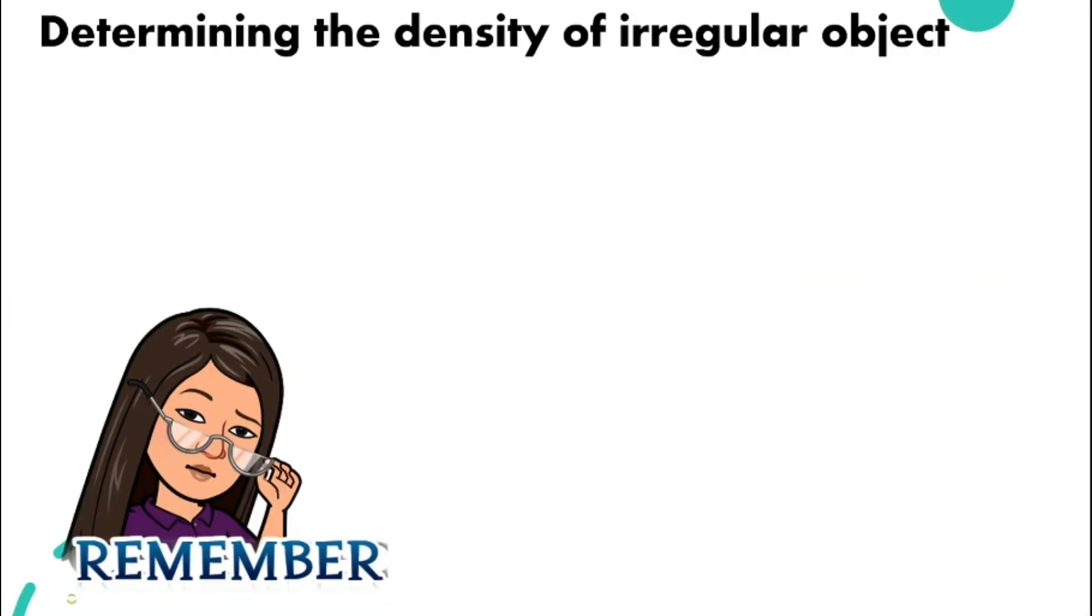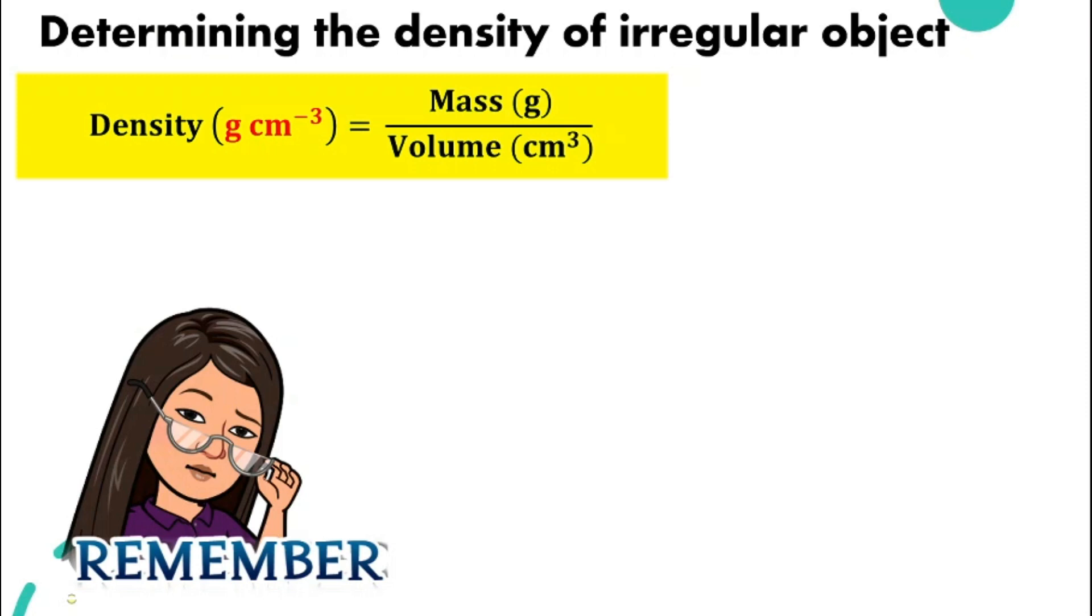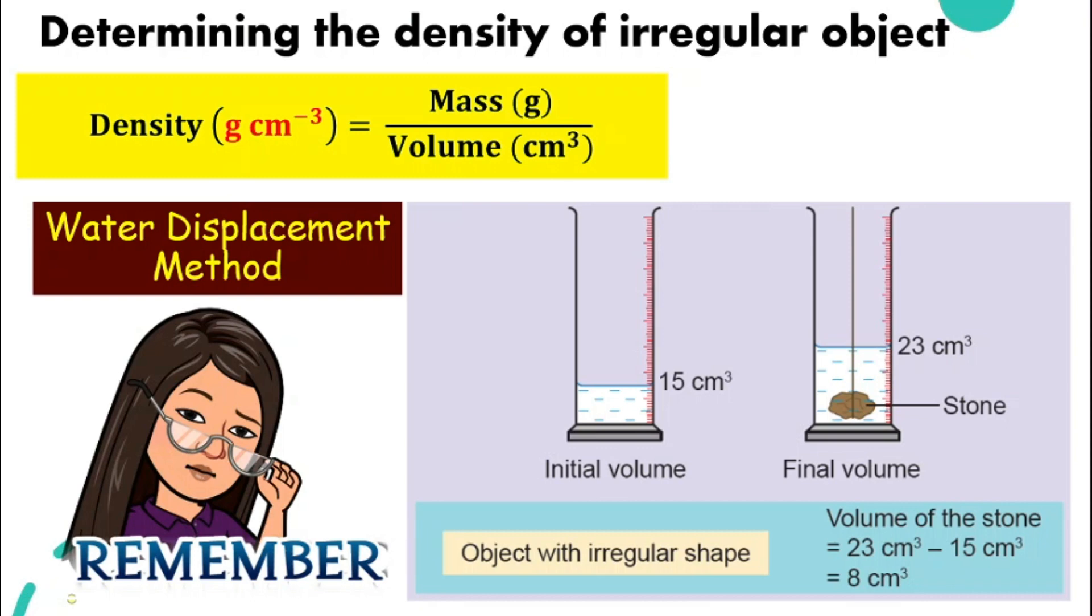So how can we determine the density of irregular objects? For the density, the formula of density, we know that we need volume. And we know that for regular objects, the volume of different shape objects, if they are regular shape, they have their own formula. What if they are irregular? Well, remember, in our previous topic, we talked about the water displacement method.